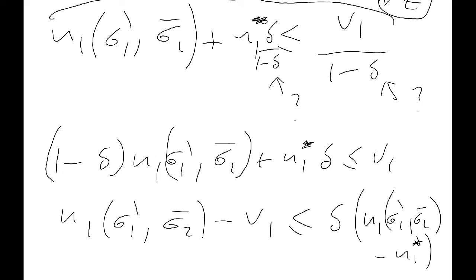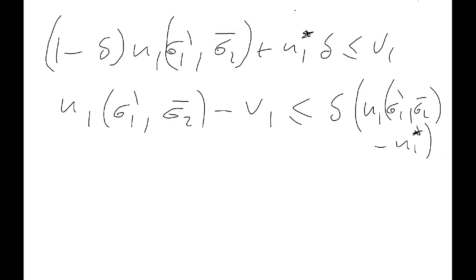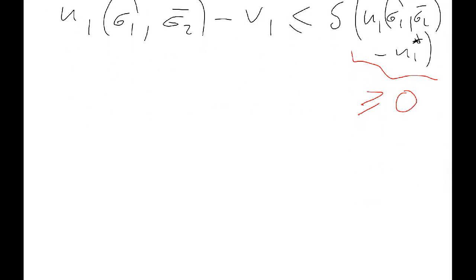Now, this right hand side here, this bracket here, is greater or equal to 0. Because, again, we've assumed that the deviation we make has to be instantaneously advantageous to player 1. So, this is greater or equal to 0. And we also know that this is also greater or equal to v1. Okay? So, because that's greater or equal to 0, we can divide and keep the sign the same. And we're pretty much done now because we basically found a delta that has the required result. Okay?